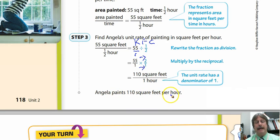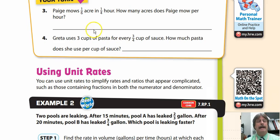Go through the steps, and now you're going to get 110 square feet per hour. That's how much Angela's going to paint every hour. I'm going to help you out with your turn. Paige mows one-sixth of an acre in one-quarter hour. How many acres does Paige mow per hour?